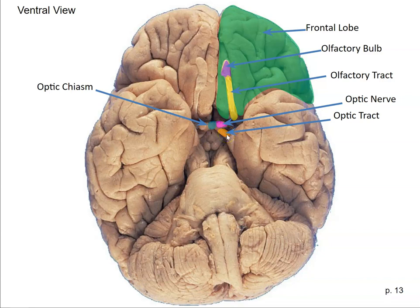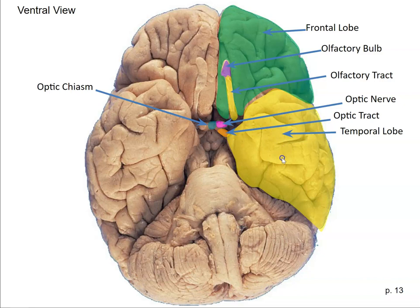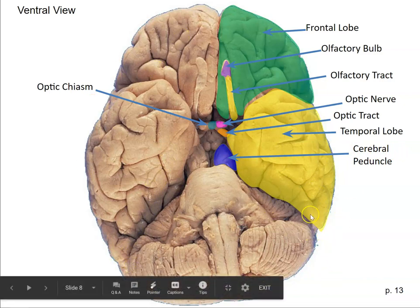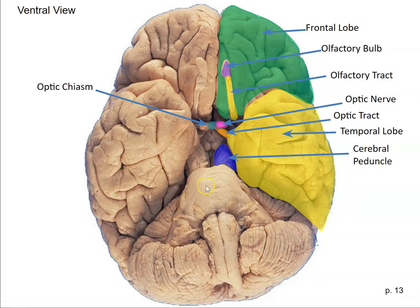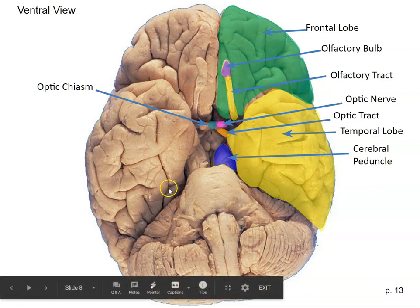Here we have the temporal lobe — underneath your temples, which is one way to remember it. Here is the cerebral peduncle. Peduncle means stalk; cerebral relates to the cerebrum, the big outer part of the brain. This is mainly white matter, mainly axons carrying action potentials up to the cerebrum and from the cerebrum down to the brainstem and spinal cord.